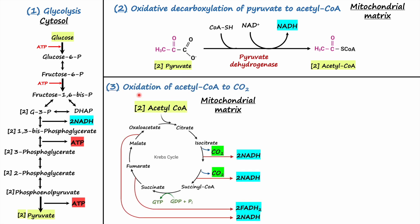The third stage is the oxidation of acetyl coenzyme A, carried out through the TCA cycle, or citric acid cycle, or Krebs cycle. During the reaction, acetyl coenzyme A is oxidized into carbon dioxide, and the electrons liberated through these oxidative processes are passed on to coenzymes such as NAD and FAD, which are then reduced to NADH and FADH2. This reaction also takes place in the mitochondrial matrix.